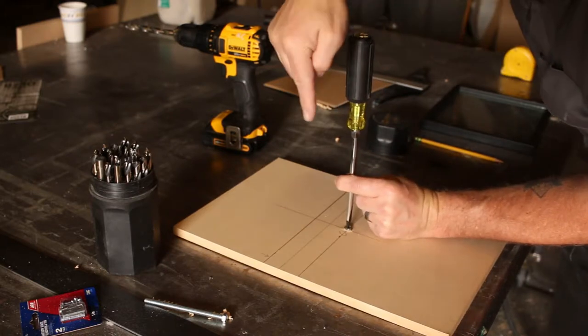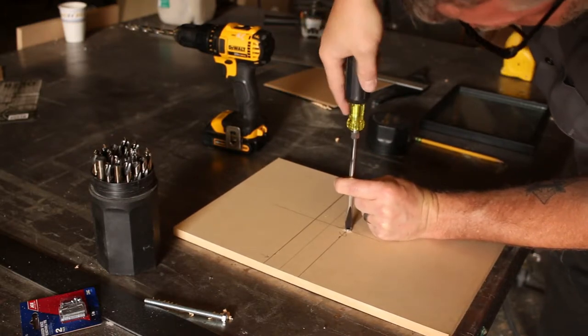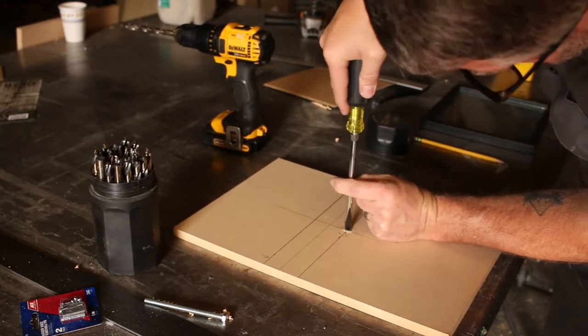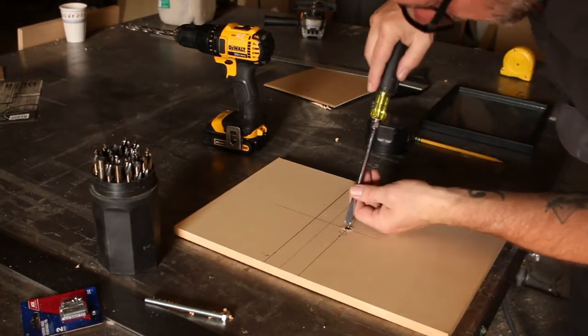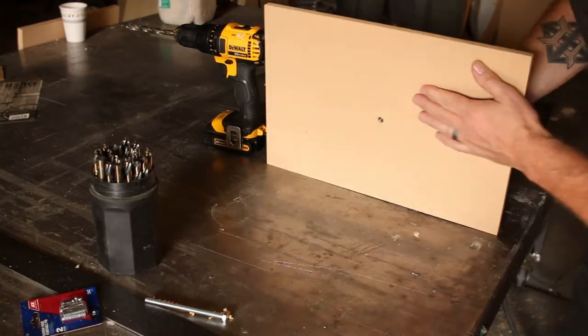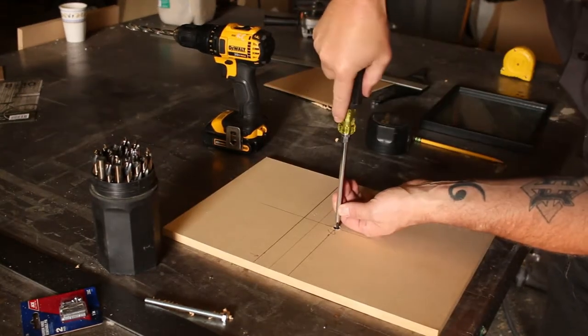I'm going to drill a hole dead center of this thing and throw that in there. It's quarter-20 on the inside, which is the same threading that is on a camera mount. So once I put this in here, I should be able to put the plate from my tripod on there and it'll mount. When drilling through your finished piece of work, you can reuse your scrap. Pop that down on there so when you drill through it's got something on the bottom and it's not going to just break apart.